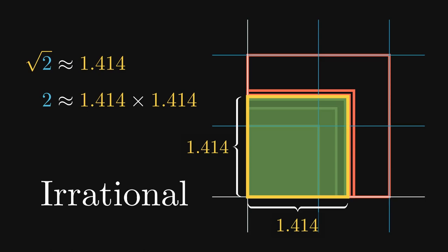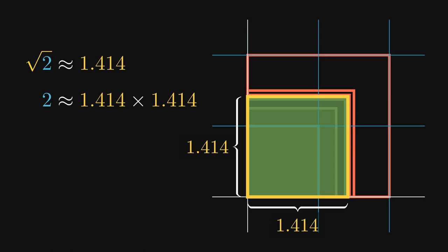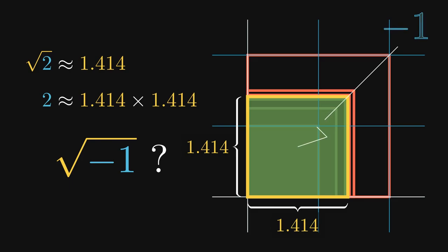But none of this adequately explains what it means to take the square root of negative 1. How can we obtain a square with area negative 1? One possible approach is by considering signed areas of squares.